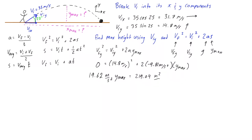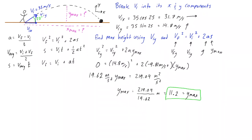Dividing 219.04 by 19.62, the units of meters squared per second squared divided by meters per second squared gives us meters. So y_max equals 11.2 meters. That is the answer to the first part of the question — the soccer ball reaches a maximum height of 11.2 meters.